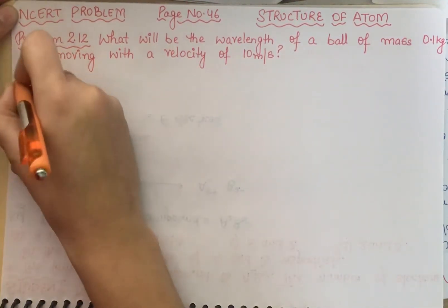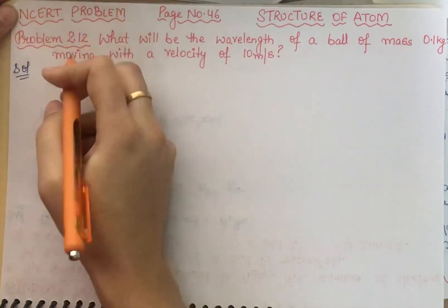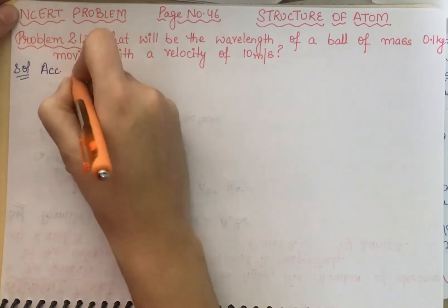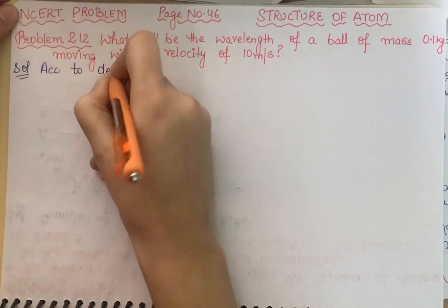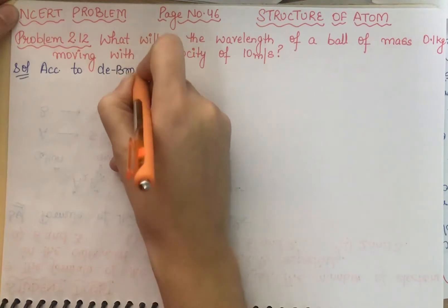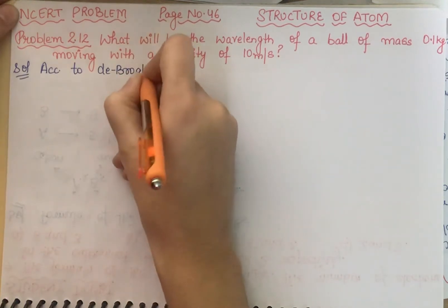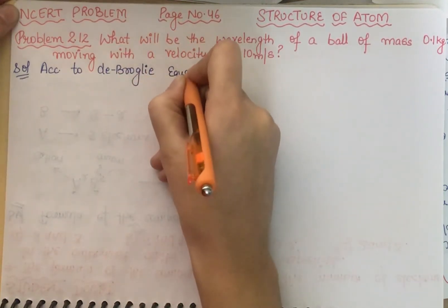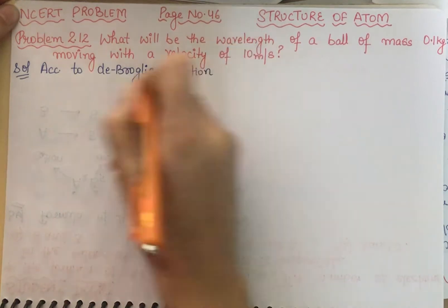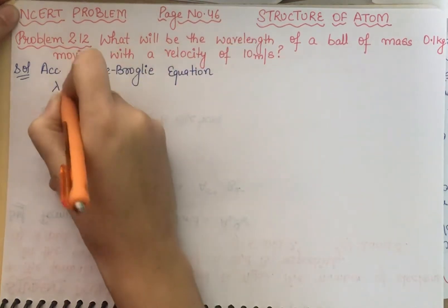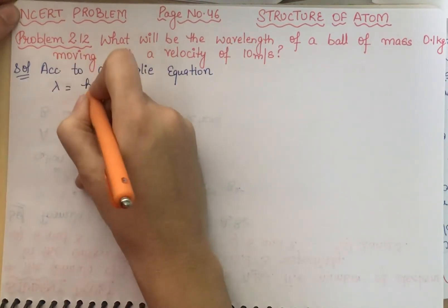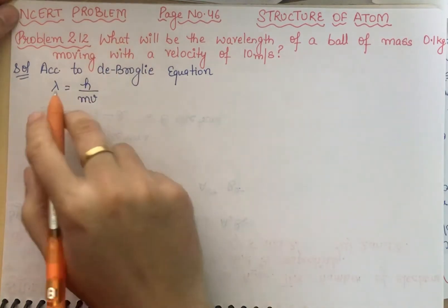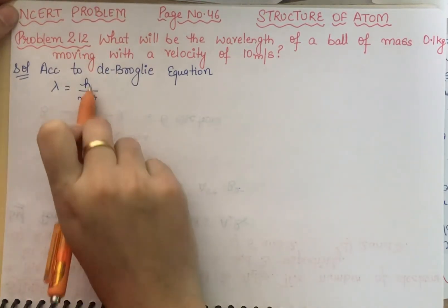In this question we will use the de Broglie equation. According to the de Broglie equation, wavelength — that means lambda — equals h by mv.